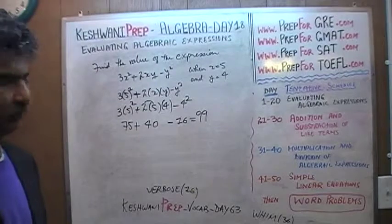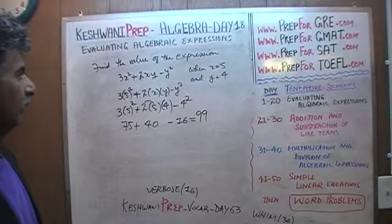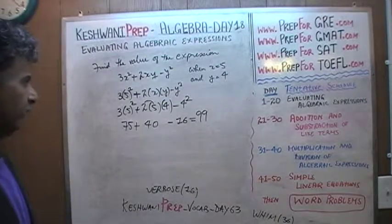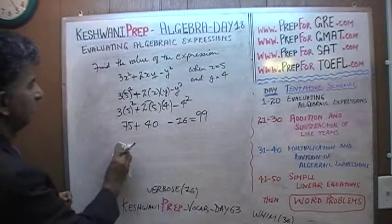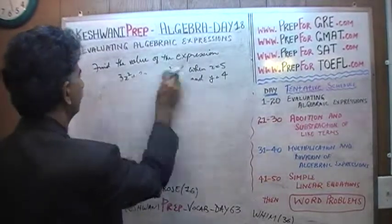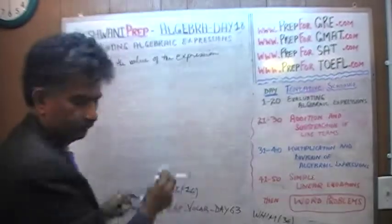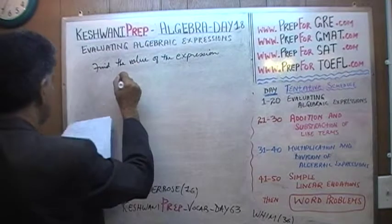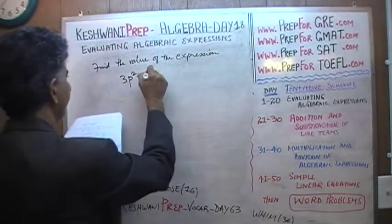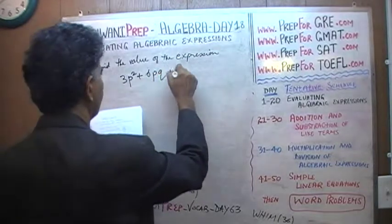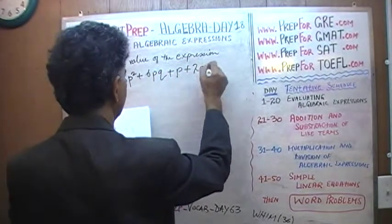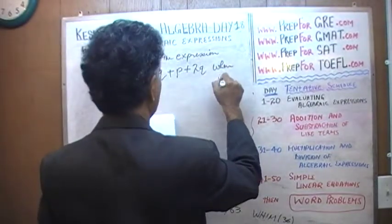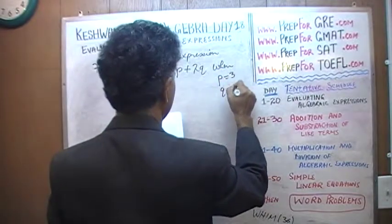That's it, we're done. The question was: what is the value of the expression when x equals 5 and y equals 4 — and the answer is 99. Should we do one more? Let's do one more. The next problem is: find the value of the expression 3p squared plus 6 times p times q, plus p plus 2 times q, when p equals 3 and q equals 10.